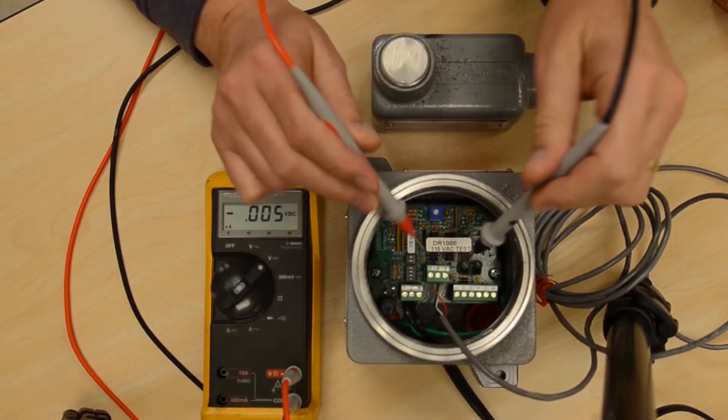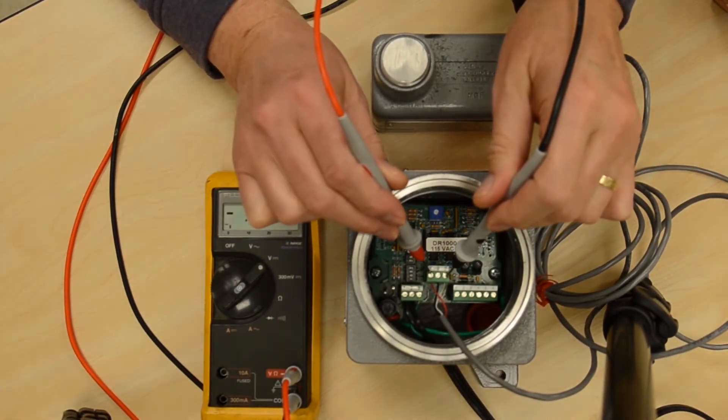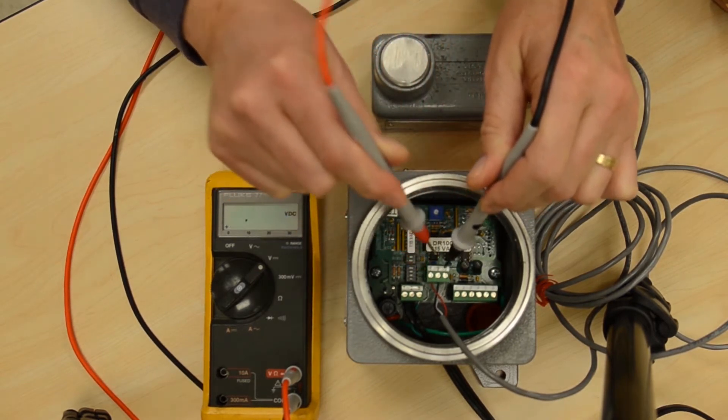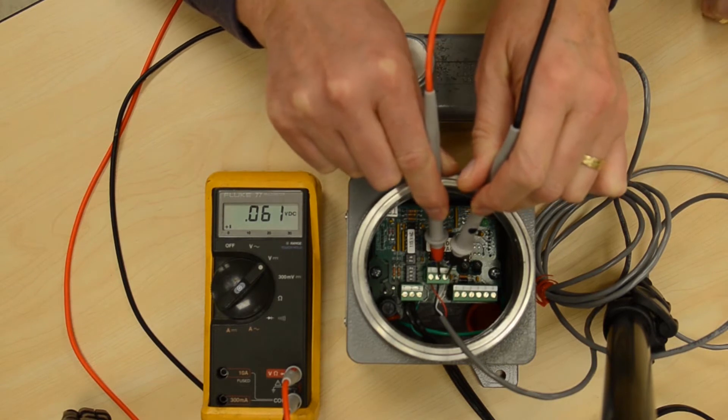Firstly, we must check for a sensor supply. This can be done by applying the positive to pin 1 and the negative to pin 3. We should see something around 16 volts if the sensor is working correctly.